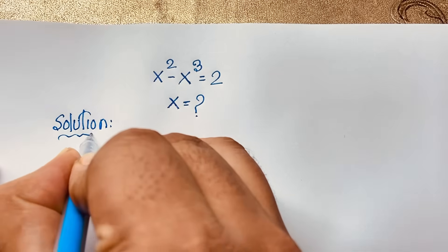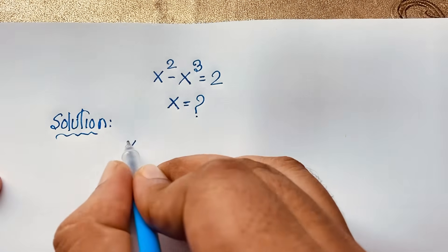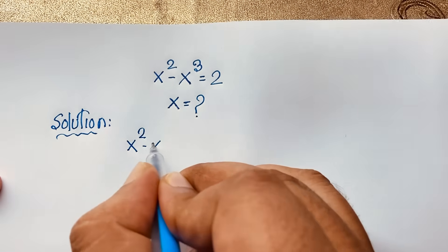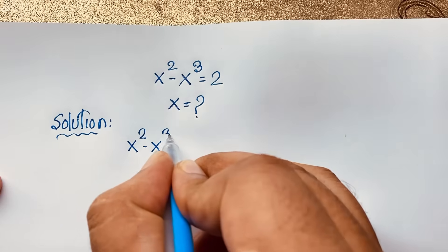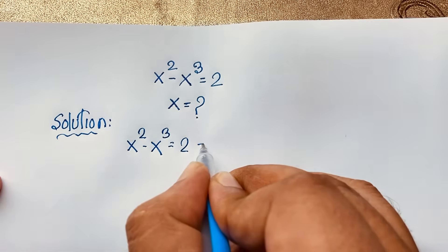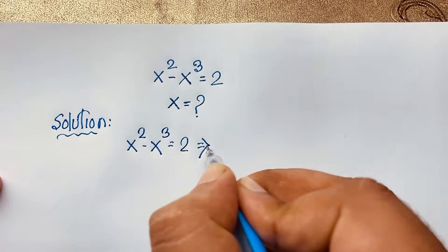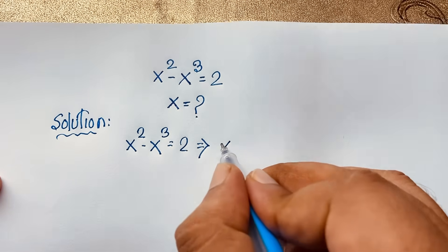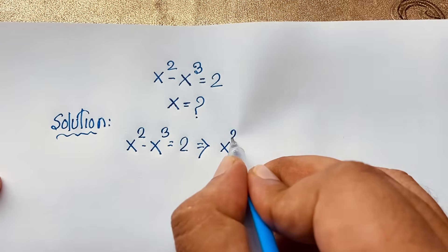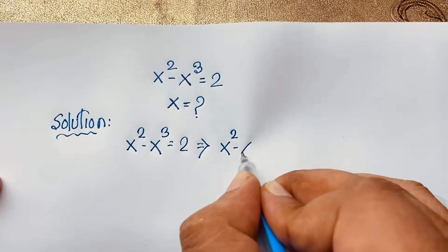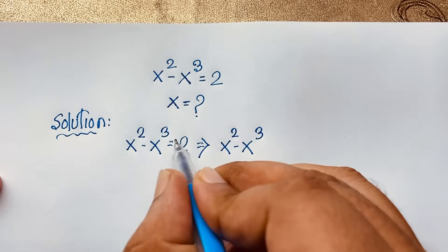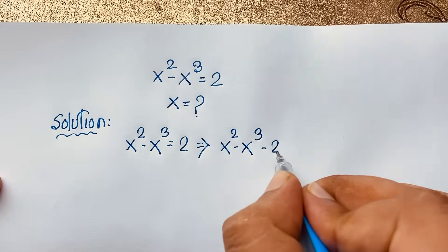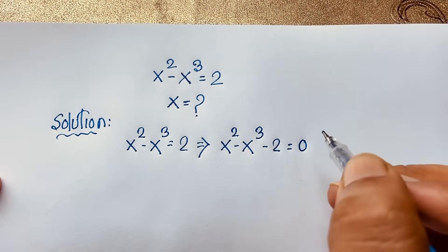Our question is x squared minus x cubed is equal to 2. This is our question. Now, if I move these two terms to this side, it will be x squared minus x cubed minus 2 is equal to 0.